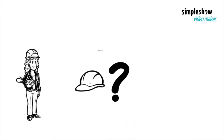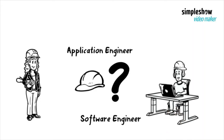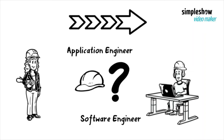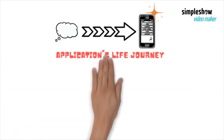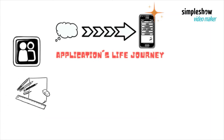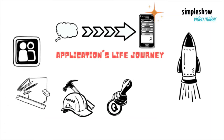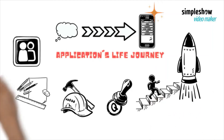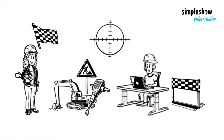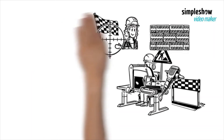So is an application engineer just a type of software engineer? To find out, let's get on this special train and follow an application's life journey. The journey of creating a new application starts from analyzing users' needs, to design, to development, to testing, to deployment, to maintenance and upgrade. Application engineers work from beginning to end, while software engineers focus deeply on the development and code.